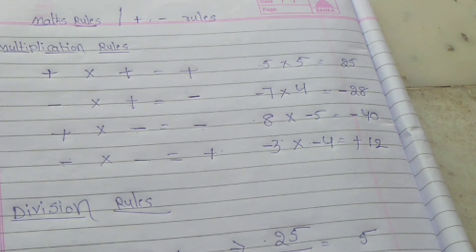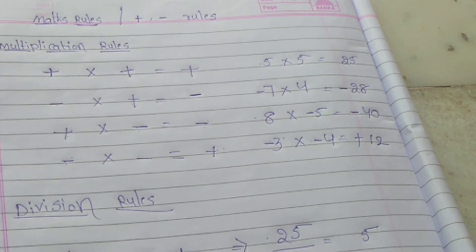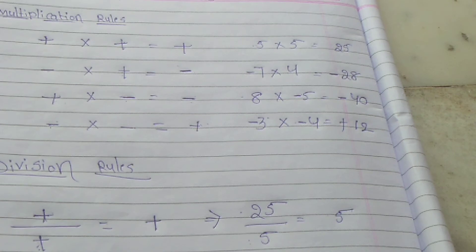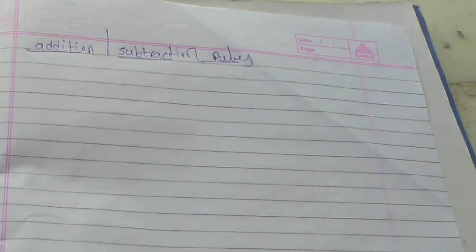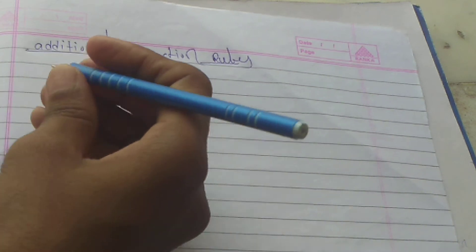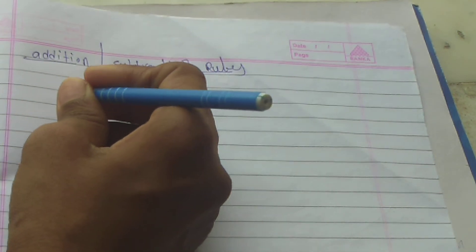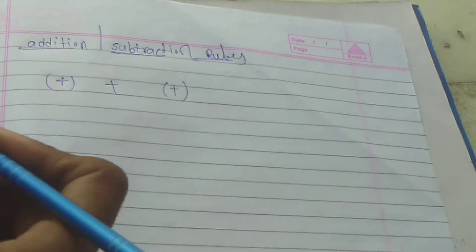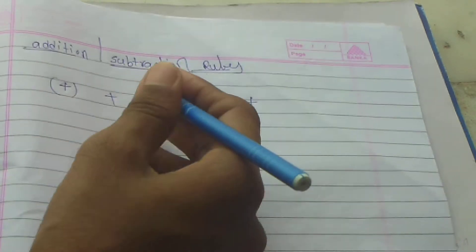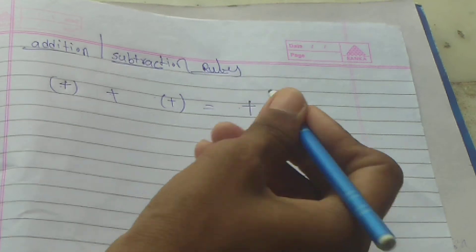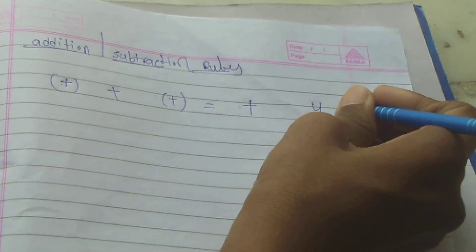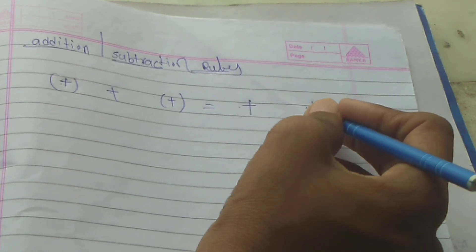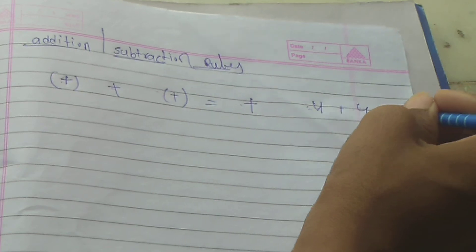But in addition and subtraction, we can get confused about plus/minus rules. Let's look: plus number plus plus number — two positive numbers added together — gives plus. For example, 4 plus 4: both are positive, so 4 plus 4 equals 8.